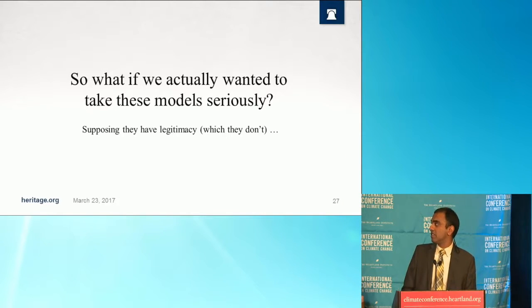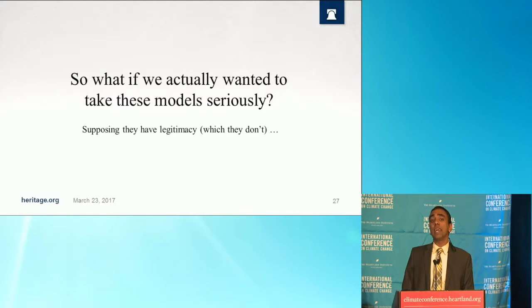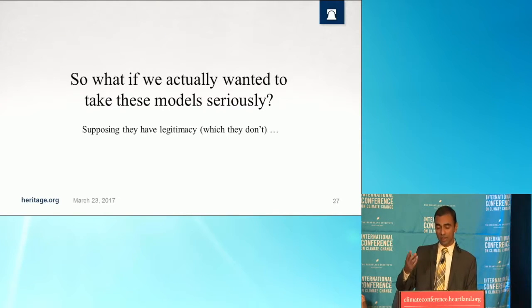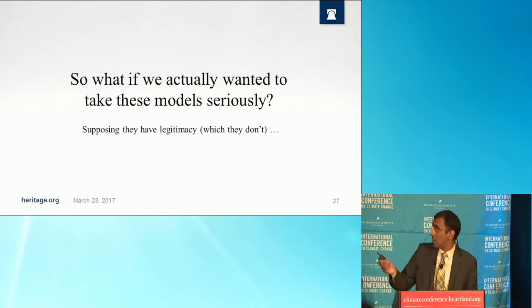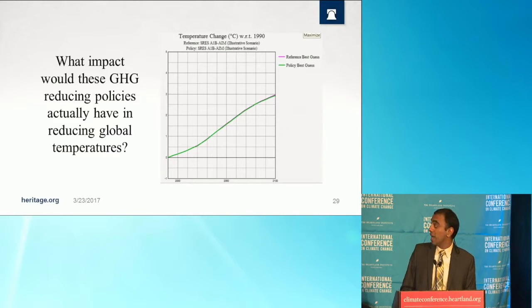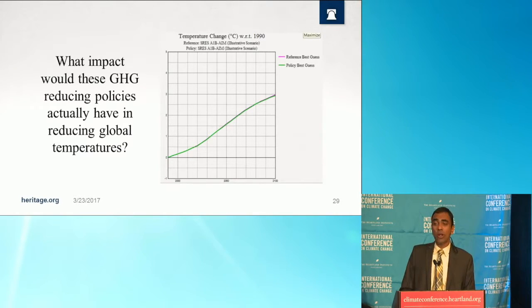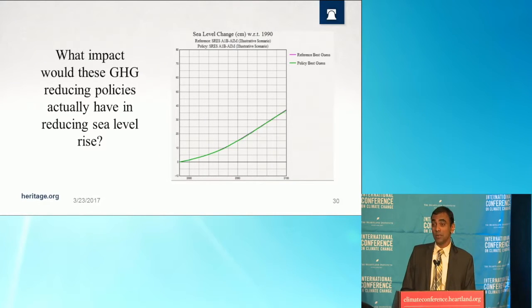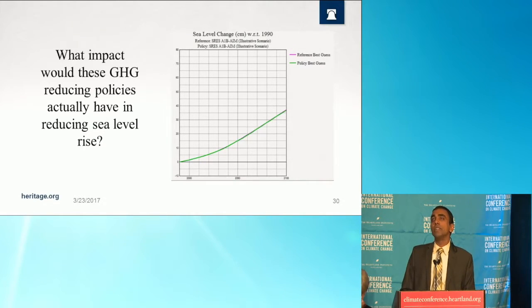What if we actually wanted to take these models seriously, supposing they have legitimacy? I ran the model for the assessment of greenhouse gas-induced climate change, looking at a hypothetical simulation of eliminating all methane emissions from the United States completely, as well as nitrous oxide and carbon dioxide emissions. Looking at these two graphs, the red line is current policy and the green curve is a hypothetical elimination of all US methane emissions. The curves are virtually identical — in 2100, we notice a measly 0.02 degrees Celsius reduction in global temperatures. And in terms of sea level rise, there would be around a 0.27 centimeter reduction.